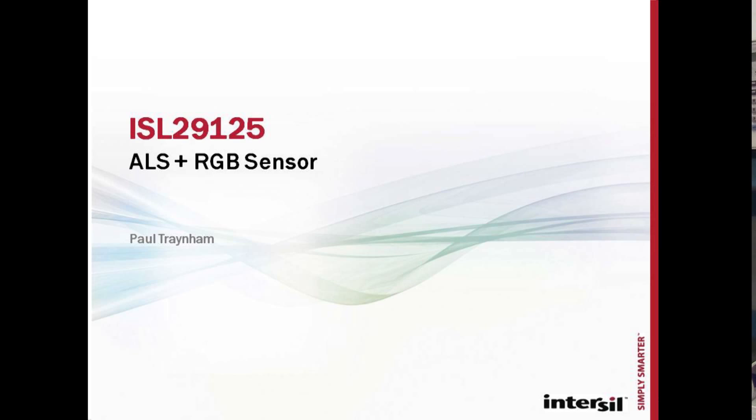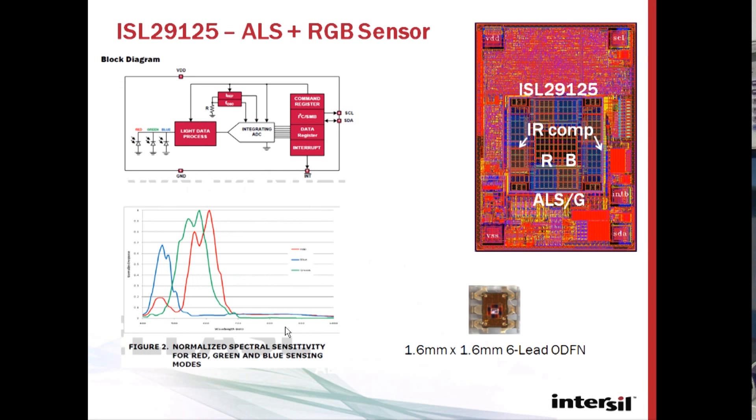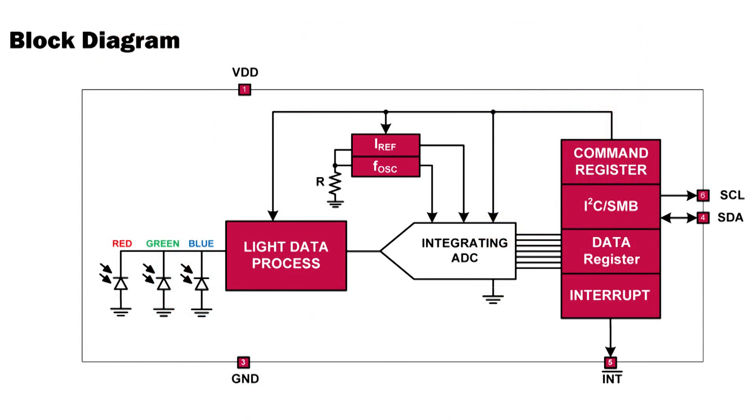Just to talk a little bit about the new light sensor, ALS and RGB sensor, the ISL29125. The part has three photodiodes, as you can see here in the block diagram. There are one set of arrays for red, green, and blue, and that light current is processed and digitized through an integrating ADC.